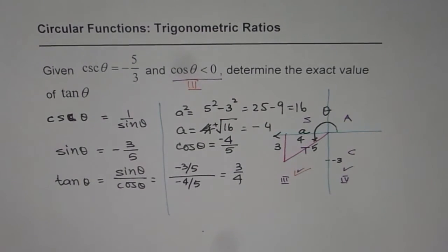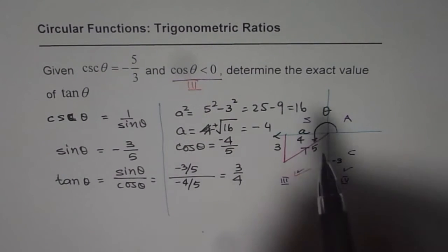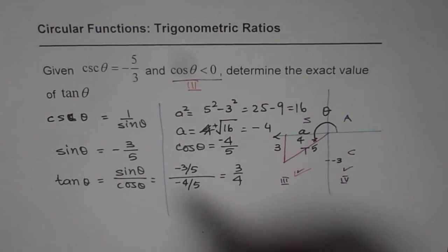So tan theta is 3 over 4 for us. So that is one way of doing it. You could have found the value of tan theta by finding the angle first. The principal angle itself or the acute angle, and then you can calculate tan theta. That's another way of doing it.